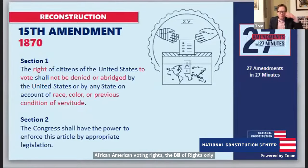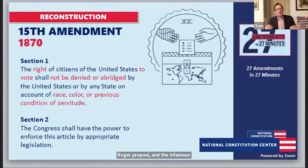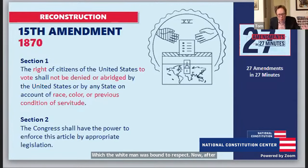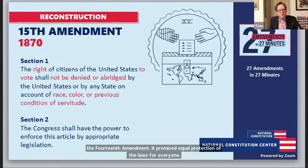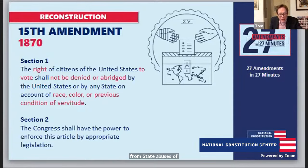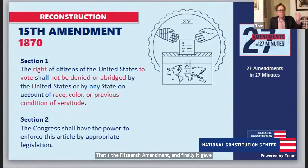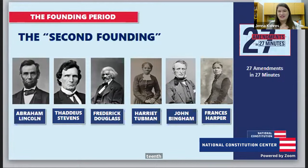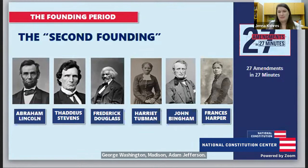The Bill of Rights only applied to the national government, not state abuses. Citizenship was left to states and courts — with Chief Justice Roger Taney's infamous Dred Scott decision saying African-Americans couldn't be United States citizens and had 'no rights which the white man was bound to respect.' After these Reconstruction amendments: the 13th abolished slavery; the 14th made everyone born on American soil a U.S. citizen, promised equal protection of the laws, and protected against state abuses of Bill of Rights protections like free speech and religious liberty; the 15th guaranteed the right to vote free of racial discrimination. It really is a second founding — just as important to discuss our second founders as Ben Franklin, Washington, Madison, and Jefferson.